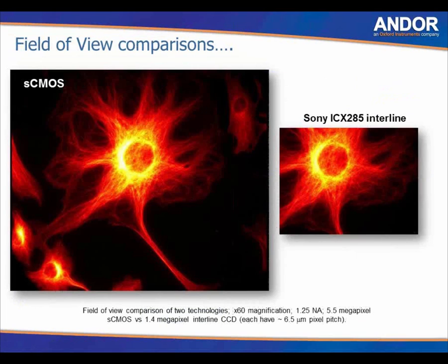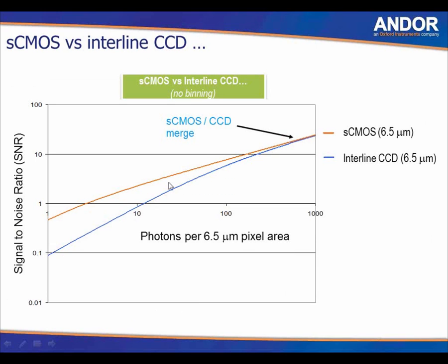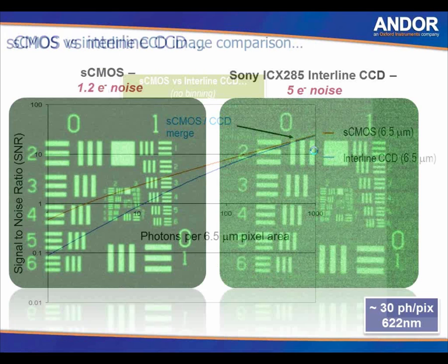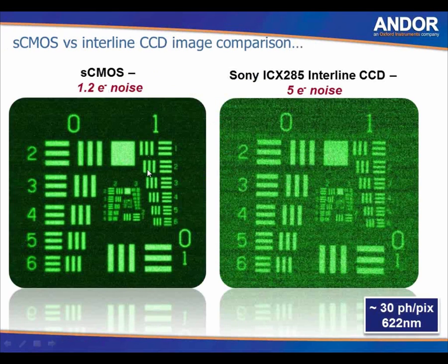In terms of field of view, the sCMOS camera has a much larger field of view than the Sony Interline's 1.4 megapixel chip. In terms of signal to noise, sCMOS has a much higher signal-to-noise ratio compared to an Interline camera. From zero to 1,000 photons per pixel, the sCMOS camera is much better until you reach very bright signals. The difference in image quality is clear: very low read noise for sCMOS versus much higher read noise with the Sony Interline camera.